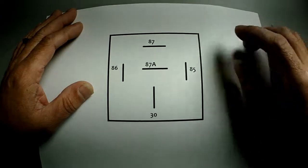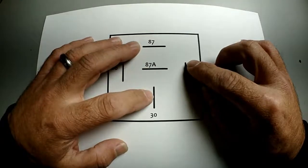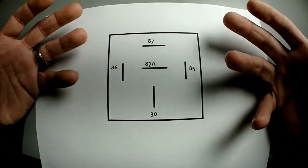Here's the five prongs. We have 85, 86, 87, 87A, and 30. What do they do? Let me show you.